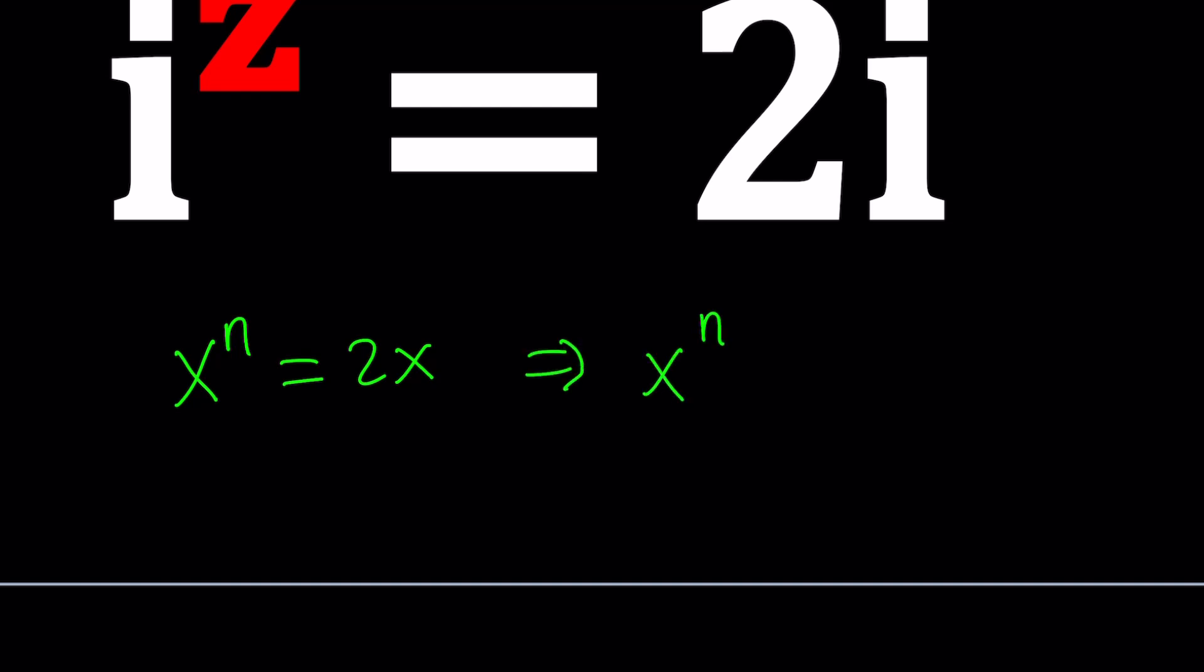You can go ahead and divide both sides by x and then raise both sides to the power 1 over n minus 1 and you'll get a solution. Of course, n equals 1 is not going to give you a solution. Well, it does have a solution, but it just doesn't come out of here. x equals 0 would be the solution in that case. But other than that, you'll have solutions.